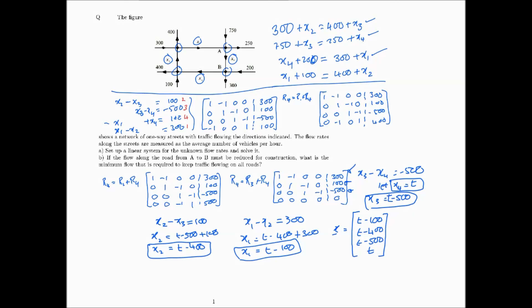Therefore the general solution is: x equals t times [1, 1, 1, 1] plus [-100, -400, -500, 0], giving x1 = t minus 100, x2 = t minus 400, x3 = t minus 500, x4 = t.